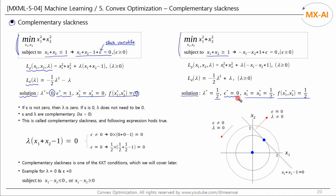Here we can observe that when the lambda is zero, the epsilon is non-zero. And when the lambda is non-zero, the epsilon is zero. The epsilon and the lambda can be said to be complementary, so the lambda times epsilon is equal to zero. This is the basic concept of the complementary slackness.